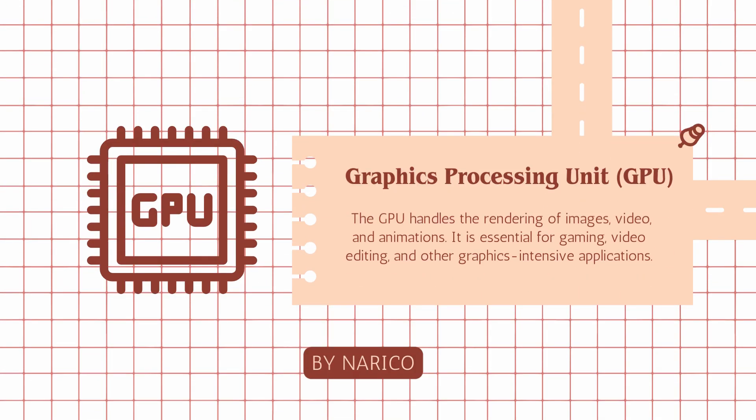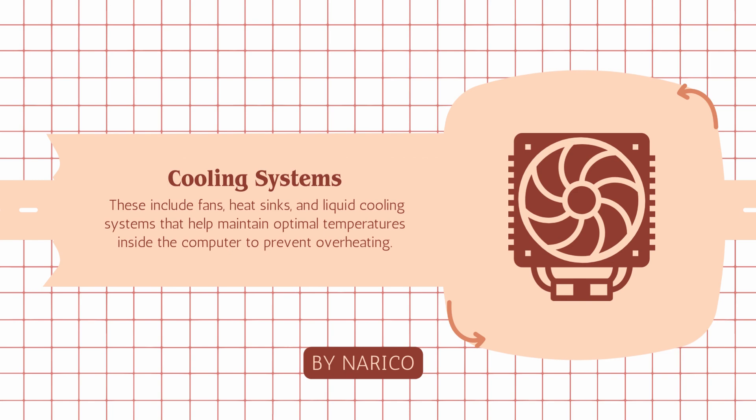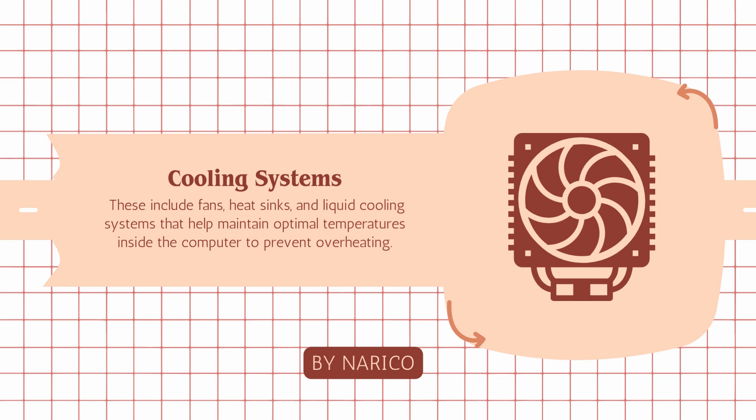Graphics processing unit, GPU: the GPU handles the rendering of images, video, and animations. It is essential for gaming, video editing, and other graphics-intensive applications. Cooling systems include fans, heat sinks, and liquid cooling systems that help maintain optimal temperatures inside the computer to prevent overheating.